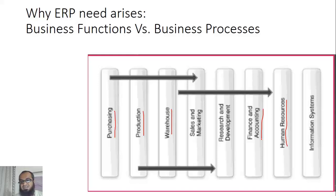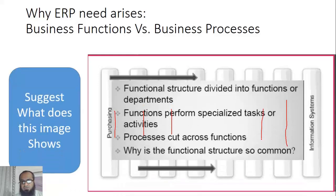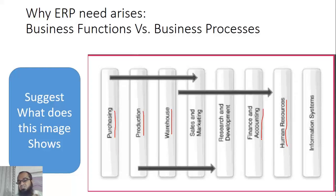When it comes to a business process, a business process actually cuts across functions. For example, purchasing — not as a department, but purchasing as a process. If we see purchasing as a process, the need for a purchase actually arises not from the purchasing department but from somewhere else — from some other department that needs goods or commodities, either to make production or for end-user needs.